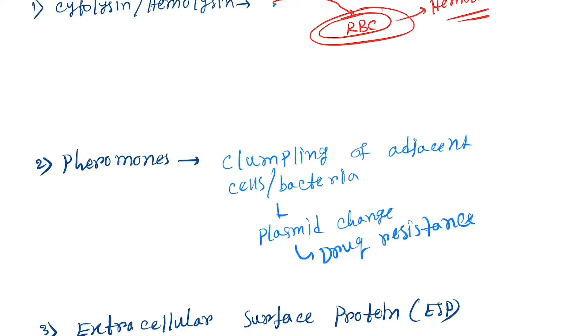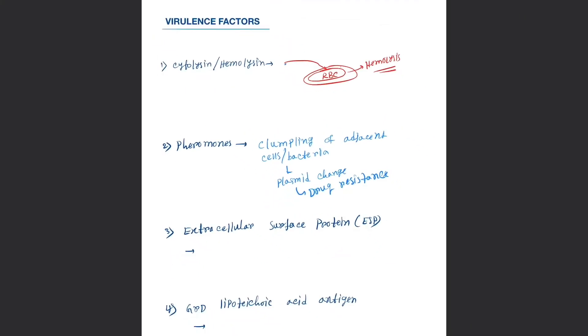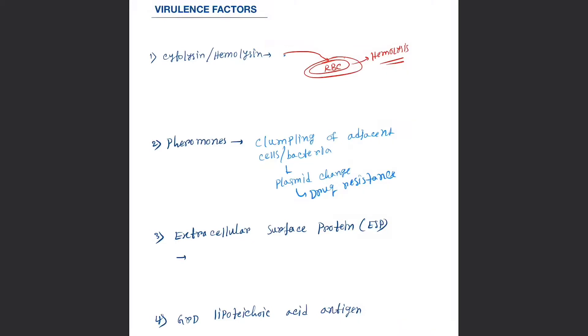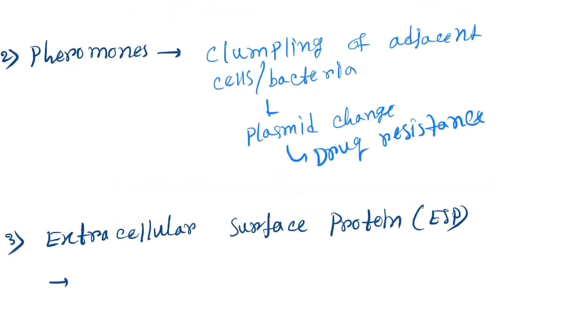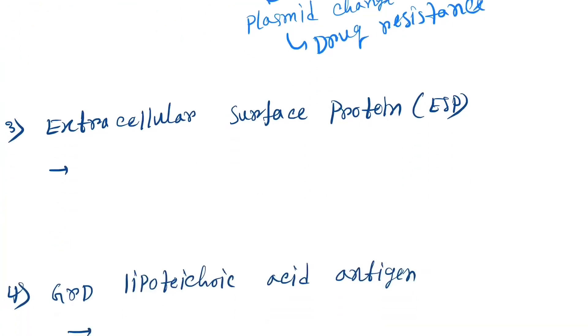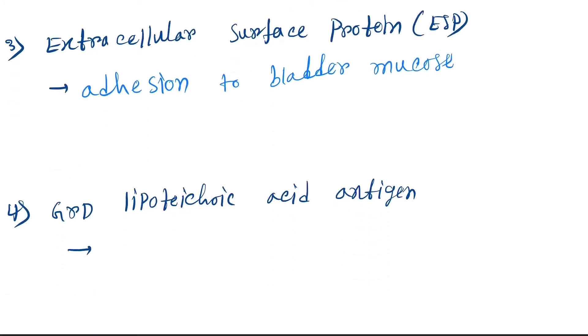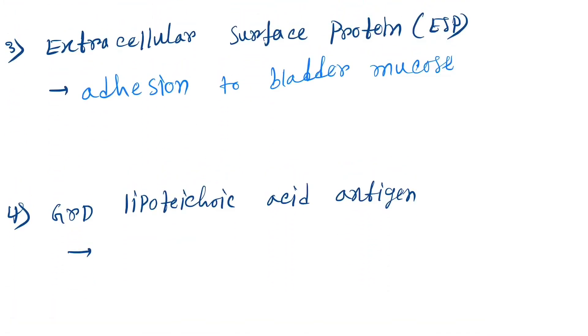Next is extracellular surface protein (ESP), which allows adhesion to bladder mucosa. Then there's group D lipoteichoic acid antigen, which helps in cytokine release.